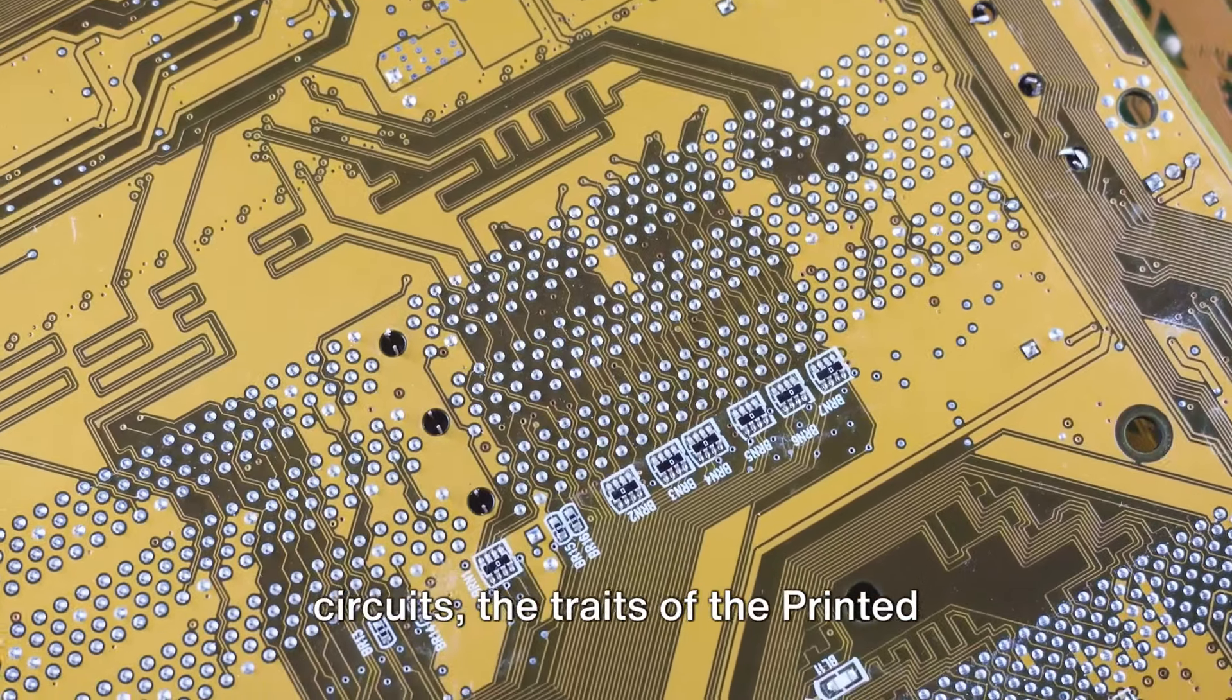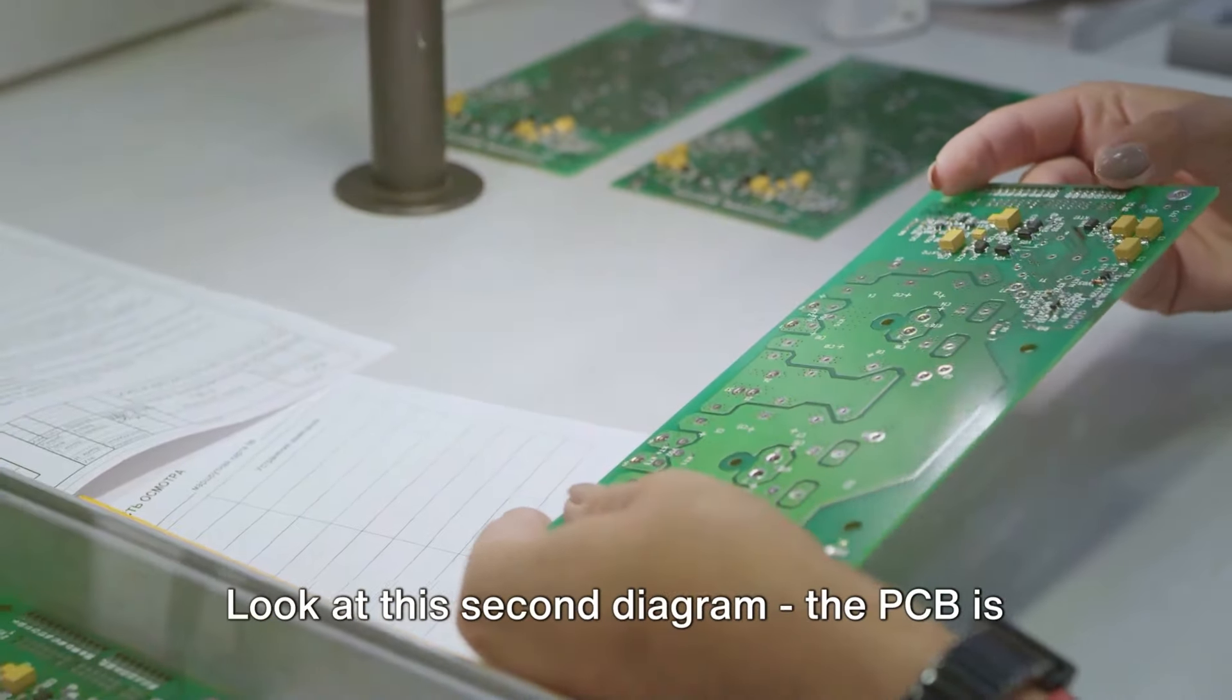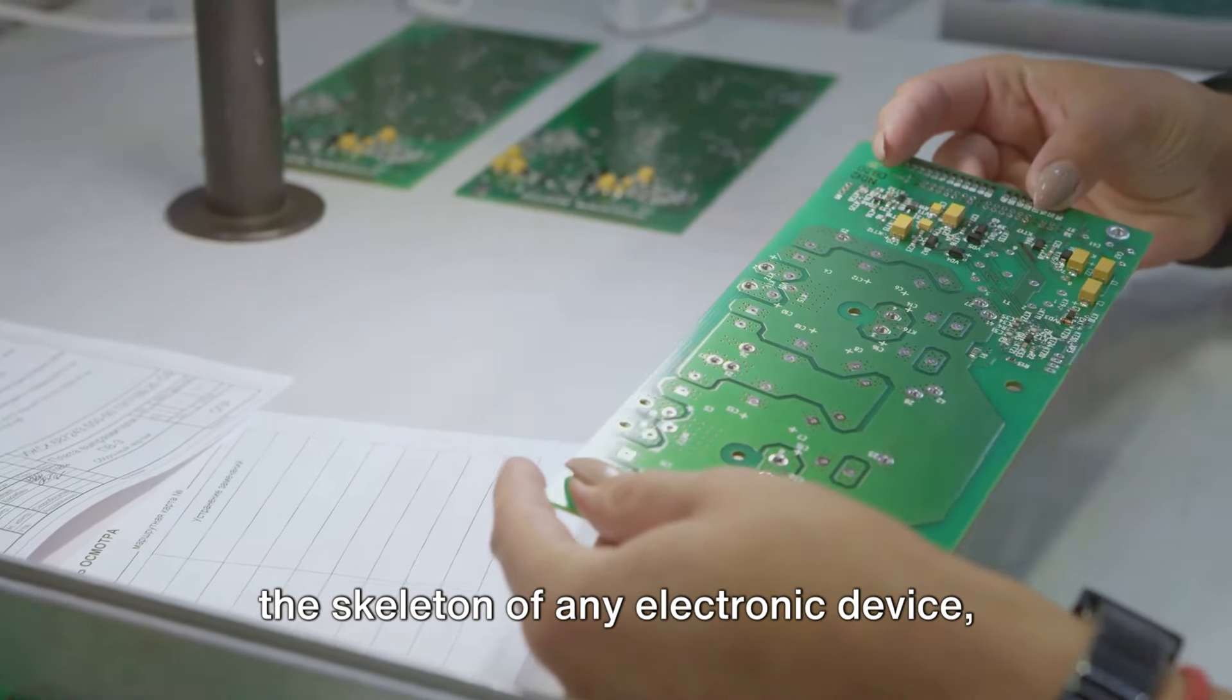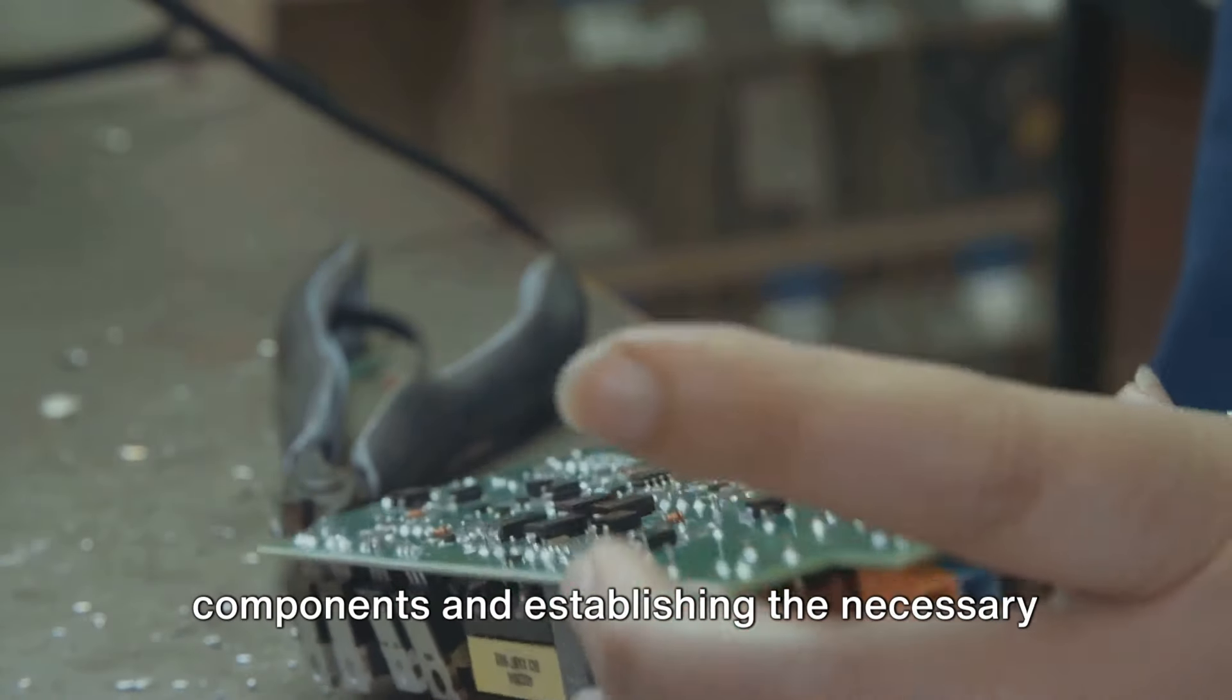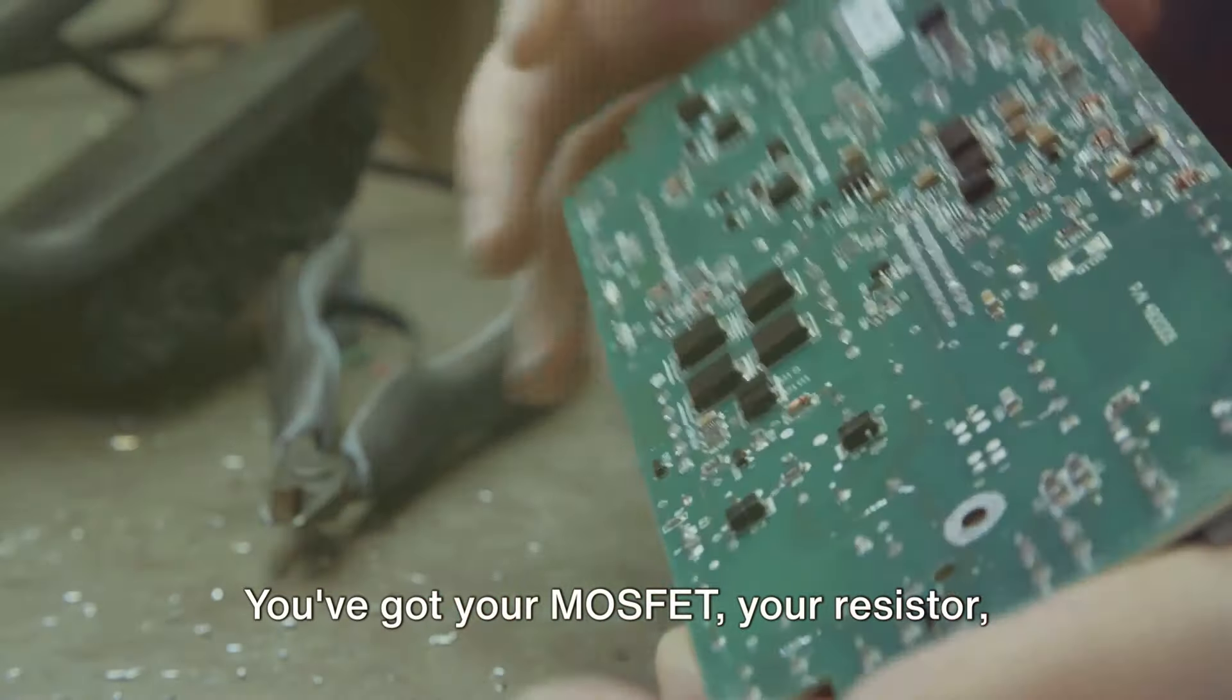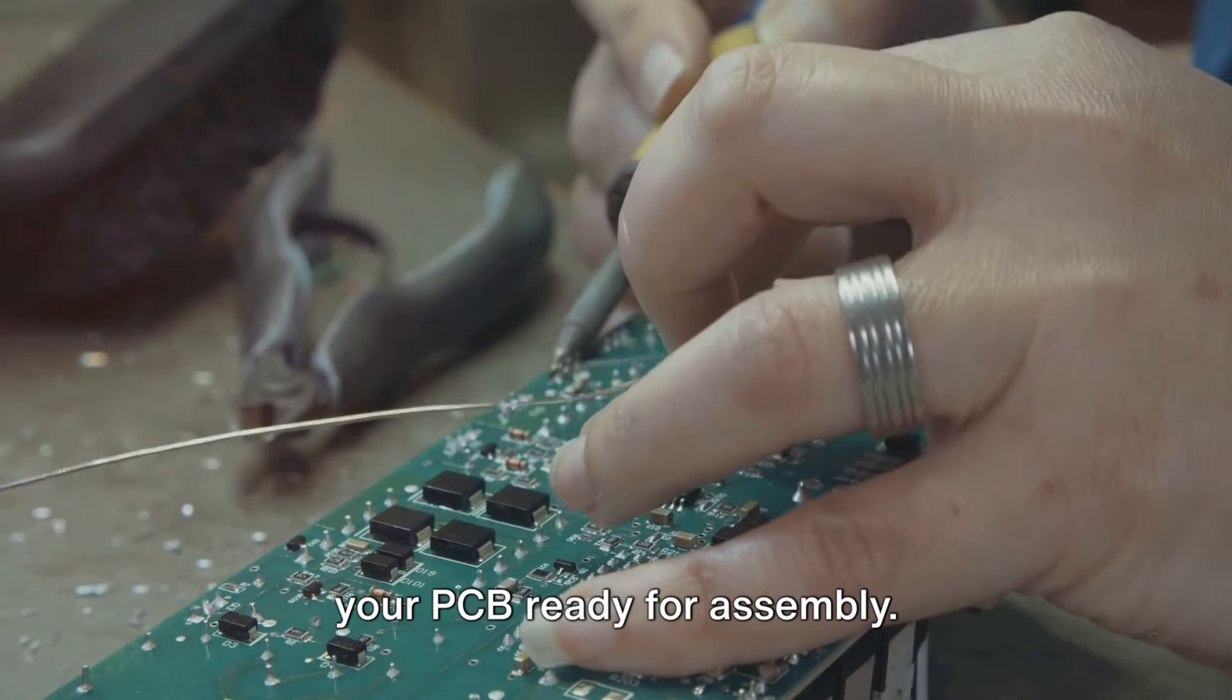By cleverly placing latches at inputs and outputs, we can generate a variety of instructions that form the basis of digital logic. When we're dealing with high-speed circuits, the traits of the printed circuit board, or PCB, become critical. Look at this second diagram. The PCB is the skeleton of any electronic device, offering a platform organizing the components and establishing the necessary links between them. Now, picture this. You've got your MOSFET, your resistor, your inductor, and your capacitor, and your PCB ready for assembly.